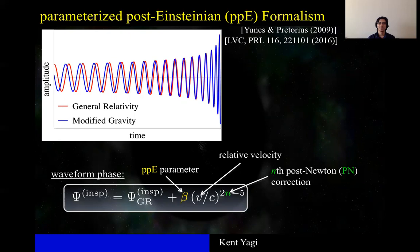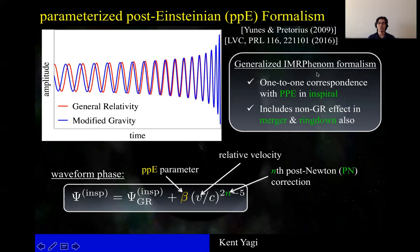There is an alternative formulation used by the LIGO-Virgo collaboration called generalized IMR-Phenom formulation, or gIMR for short.